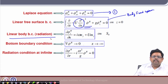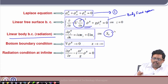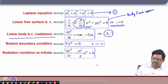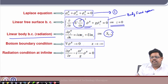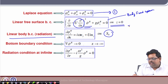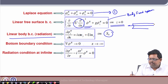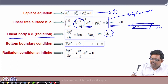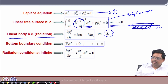This is the body boundary condition and it is applied at z equal to 0. In the case of a linear body boundary condition, it is applied on S0. Now, this is z equal to 0, and we can call it the mean wetted surface at z equal to 0. We can call this the mean wetted surface.